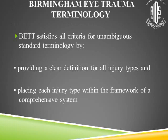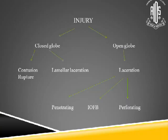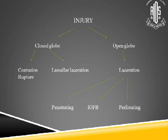Birmingham Eye Trauma Terminology satisfies all criteria and provides a clear definition for all injury types, placing each injury within a comprehensive system — dividing the injury into a closed globe or an open globe, a closed globe into a contusion, rupture or lamellar laceration, and an open globe into a laceration which can be penetrating, perforating, or an intraocular foreign body. The Ocular Trauma Score gives you a 70–77% chance to predict the final functional outcome, supporting appropriate patient counselling, correct triage, management decisions, and prognostication.